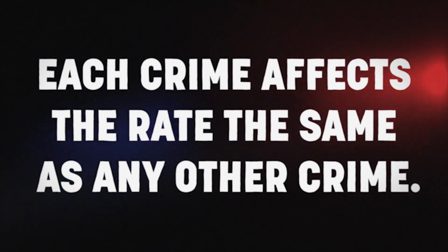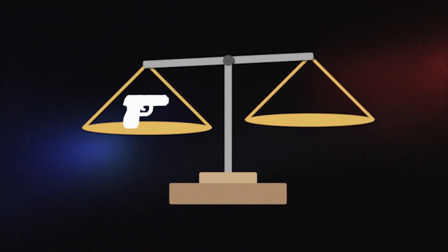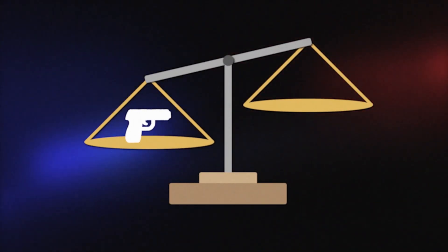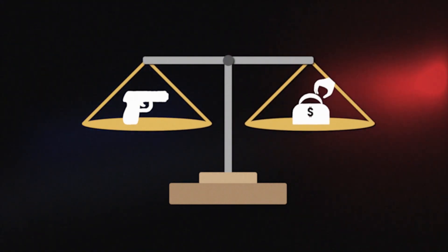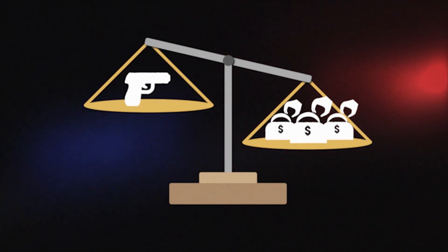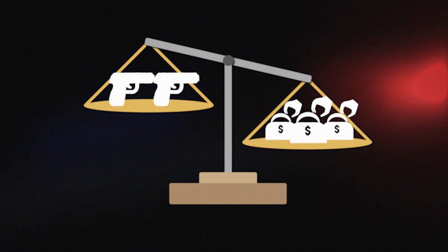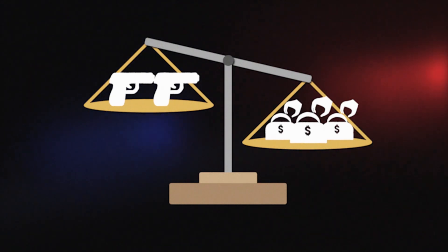Each crime affects the rate the same as any other crime. For example, one murder has the same impact on the crime rate as one property theft. Therefore, the conventional crime rate is typically influenced by changes in high volume and relatively less serious crimes. It is less effective at reflecting changes in less frequent crimes, even if they are more serious.